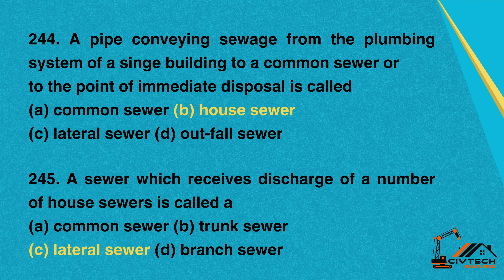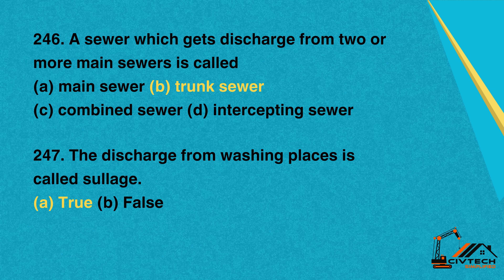Question 246: A sewer which gets discharge from two or more main sewers is called. A. Main sewer. B. Trunk sewer. C. Combined sewer. D. Intercepting sewer. Correct option: B. Trunk sewer.